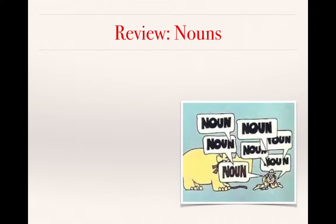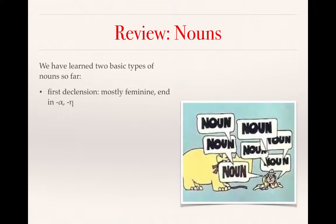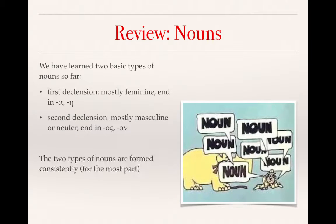Let's begin with a brief review of nouns and what we've learned so far. We've learned two basic types of nouns: first declension nouns, which are mostly feminine and end in alpha or eta, and second declension nouns, which are mostly masculine or neuter and end in os or on. These two types are formed fairly consistently, so as we move into third declension nouns, we need to be aware that third declension nouns are way more weird.